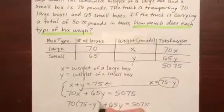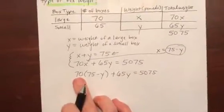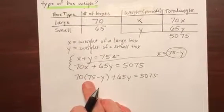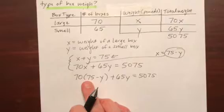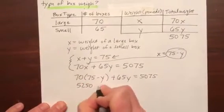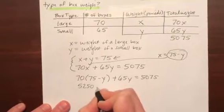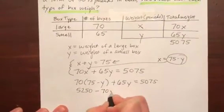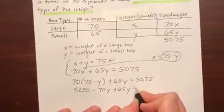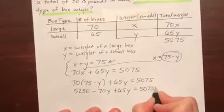And then I do this multiplication by distributing. 70 times 75 would be 5,250. And then 70 times negative y would be minus 70y plus 65y equals 5,075.